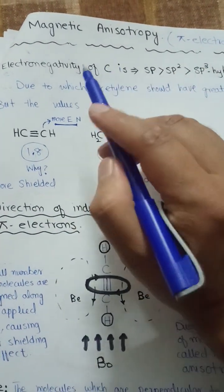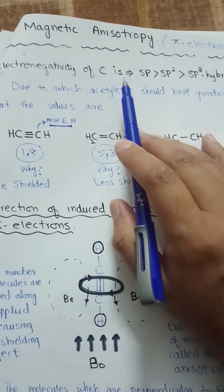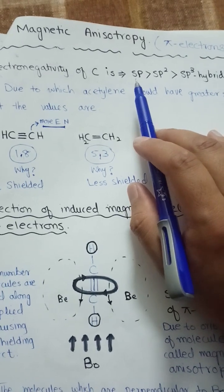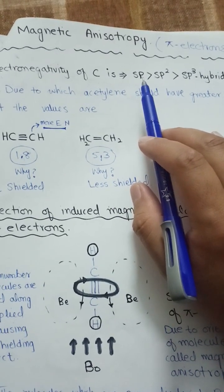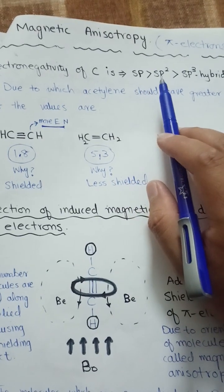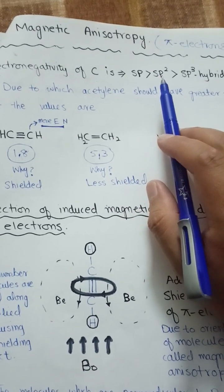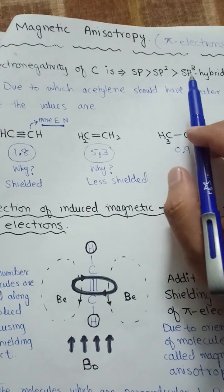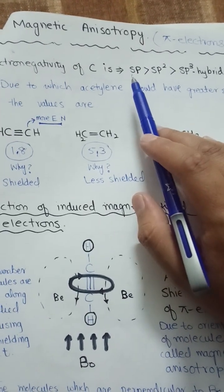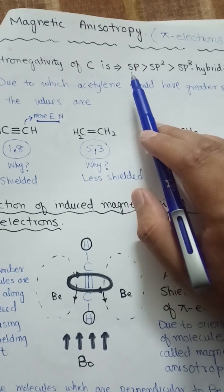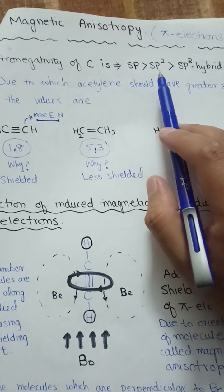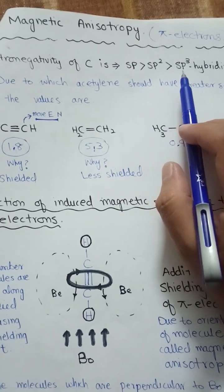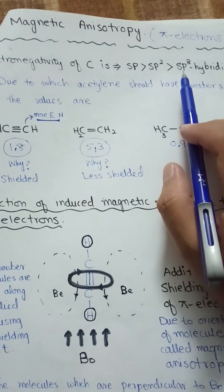We know that the electronegativity of a carbon atom is dependent on hybridization. In the case of sp hybridized molecules, the carbon atom is more electronegative as compared to sp2 hybridized atoms, and sp2 hybridized carbon atoms are more electronegative than sp3 hybridized atoms. This is because of the S-character. In sp hybridization, there is 50% S-character, which decreases to 33% in sp2.